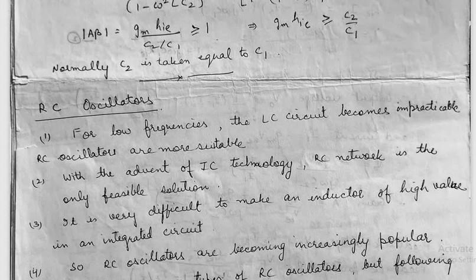RC Oscillators are generally used for oscillations that are produced for low frequency to medium frequency range. These are preferred because for low frequencies, the LC circuit becomes impracticable, so RC Oscillators are more suitable.